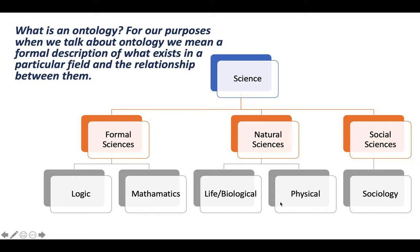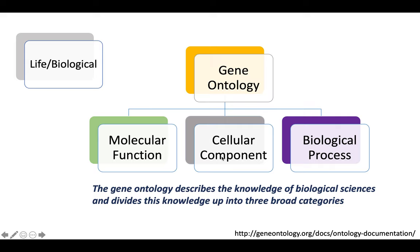Lucky for us, as people interested in life and biological sciences, we do have an ontology that tries to describe the function of all genes in life. This is known as the Gene Ontology. The Gene Ontology, which belongs to the life and biological sciences, can be broken down into three broad categories: gene ontologies that refer to molecular function, gene ontologies that refer to the cellular location where the function takes place — for example, on the membrane or in the mitochondria — and gene ontology that refers to the biological process that a gene's function takes place in.